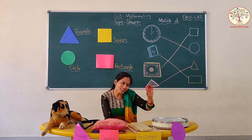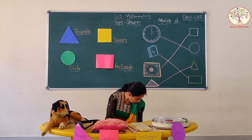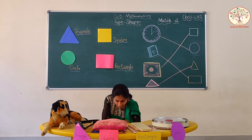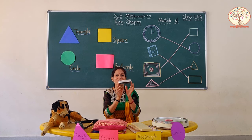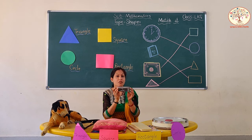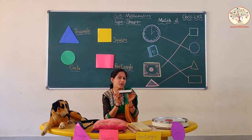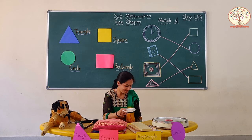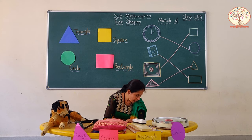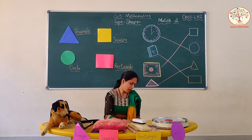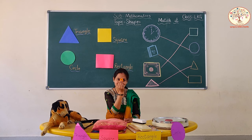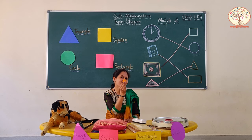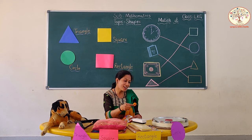I will keep the bangle in the circle house. Now, I have a duster. What is the shape of this duster? Rectangle. Very good. And I have crackers. What is the shape of crackers? Circle shape. So, it will go to the circle house.